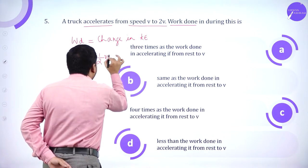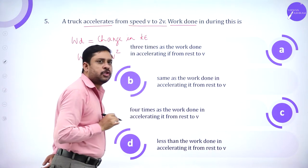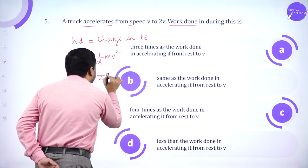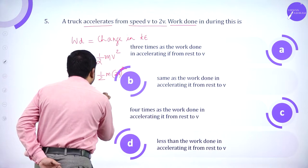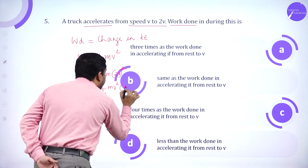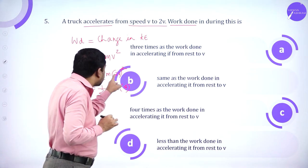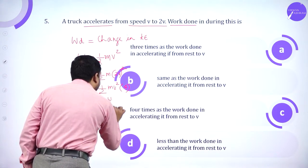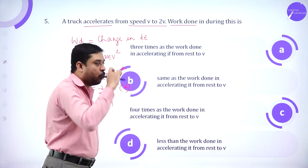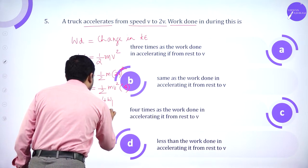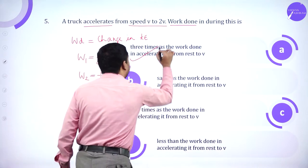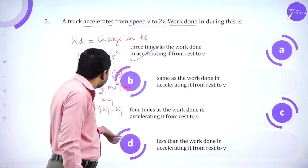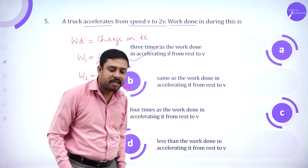In the first case, kinetic energy is ½mv². In the second case, speed is 2v, so kinetic energy is ½m(2v)² = 4 × ½mv² = 4W₁. Therefore the work done ΔW = 4W₁ − W₁ = 3W₁, which is 3 times the work in accelerating from rest to v.